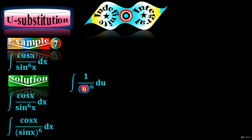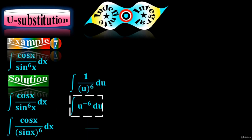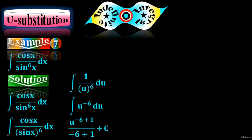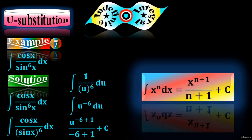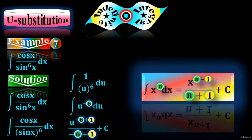Pull u to the 6 up to the numerator to get the integral of u to the minus 6 du. Integrate to get u to the minus 6 plus 1 over minus 6 plus 1, plus an arbitrary constant. We apply the power rule formula — the integral of x to the n — where n equals minus 6.